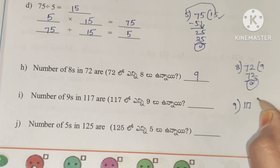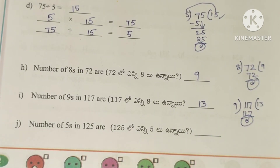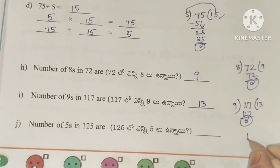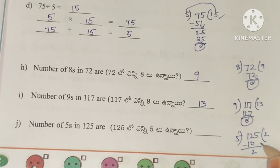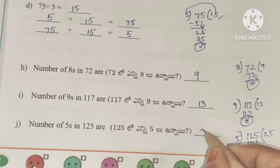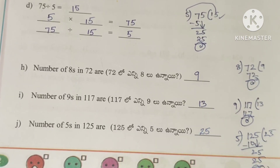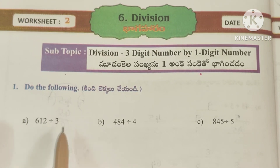Number of 5s in 125: dividing 125 by 5 — 5 twos are 10, after subtracting 2 comes down, then 5 fives are 25, remainder 0 — so the answer is 25. Next, Worksheet 2.